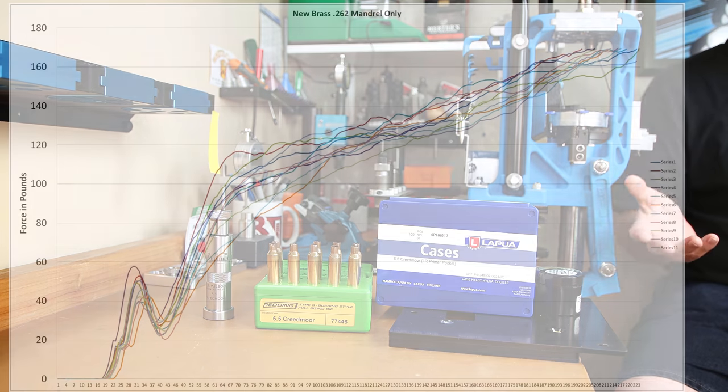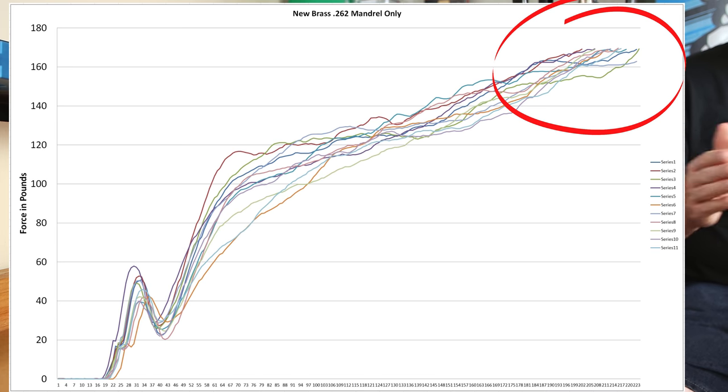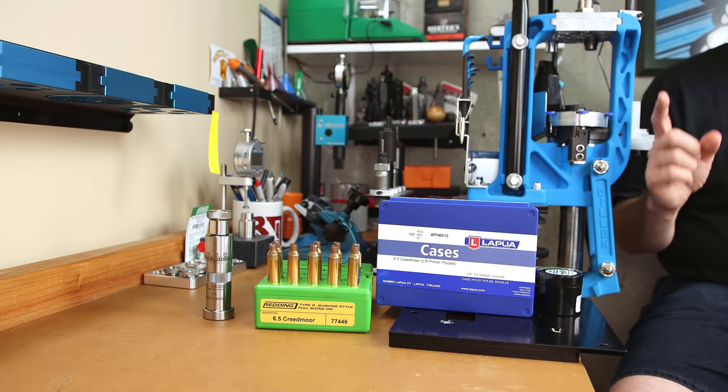So our second option, not annealing, just going straight to that 262 mandrel. So one thing we can see over annealed brass was the initial force to start the seating process was a little bit higher in our non-annealed brass. And one thing we'll need to point out in several of our charts is that the maximum seating force that the press was using maxed out somewhere around 170 pounds. Any of the charts you see where they stopped short of that full length, the seating process had stopped, but that would become more apparent in our next graph.